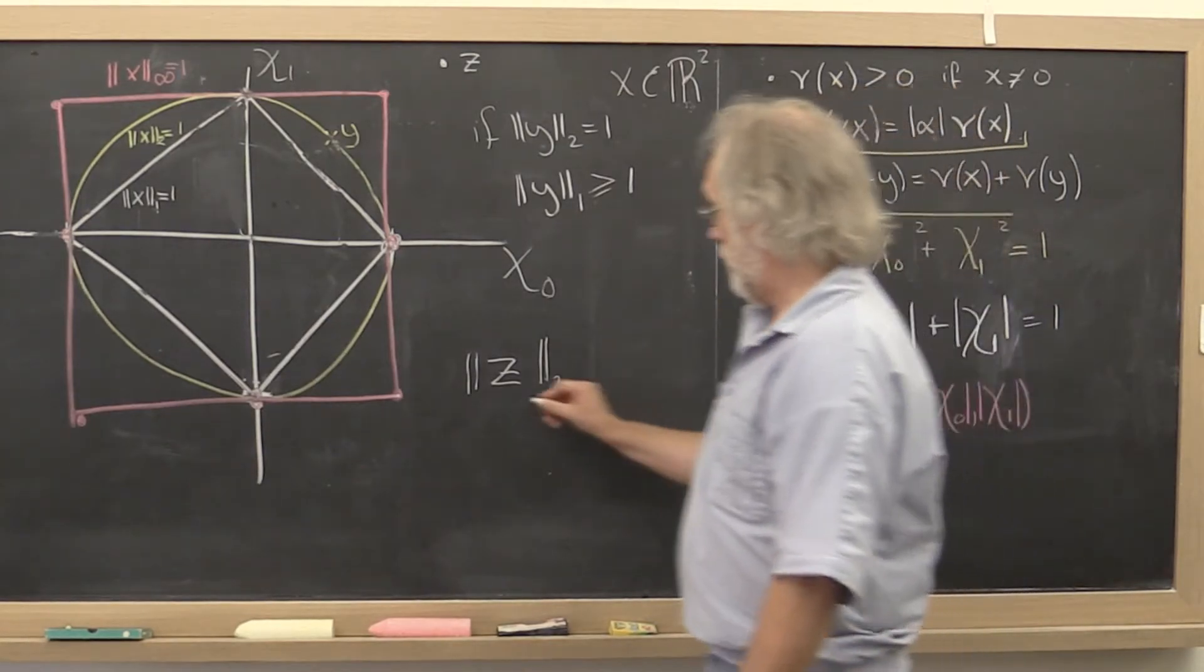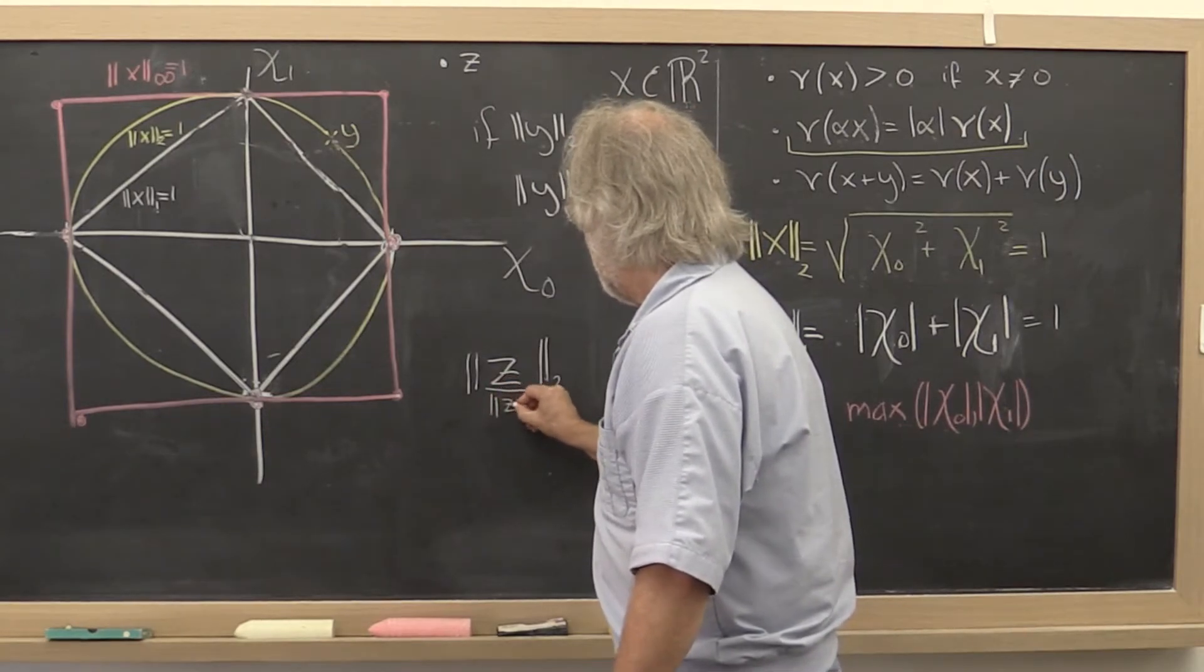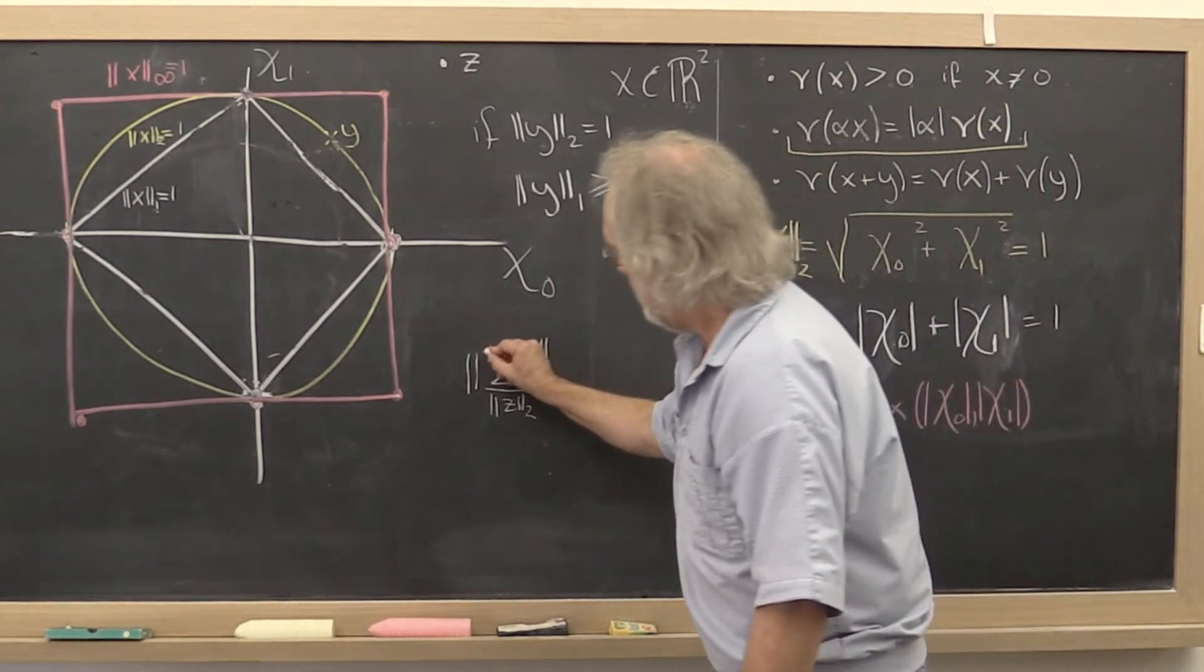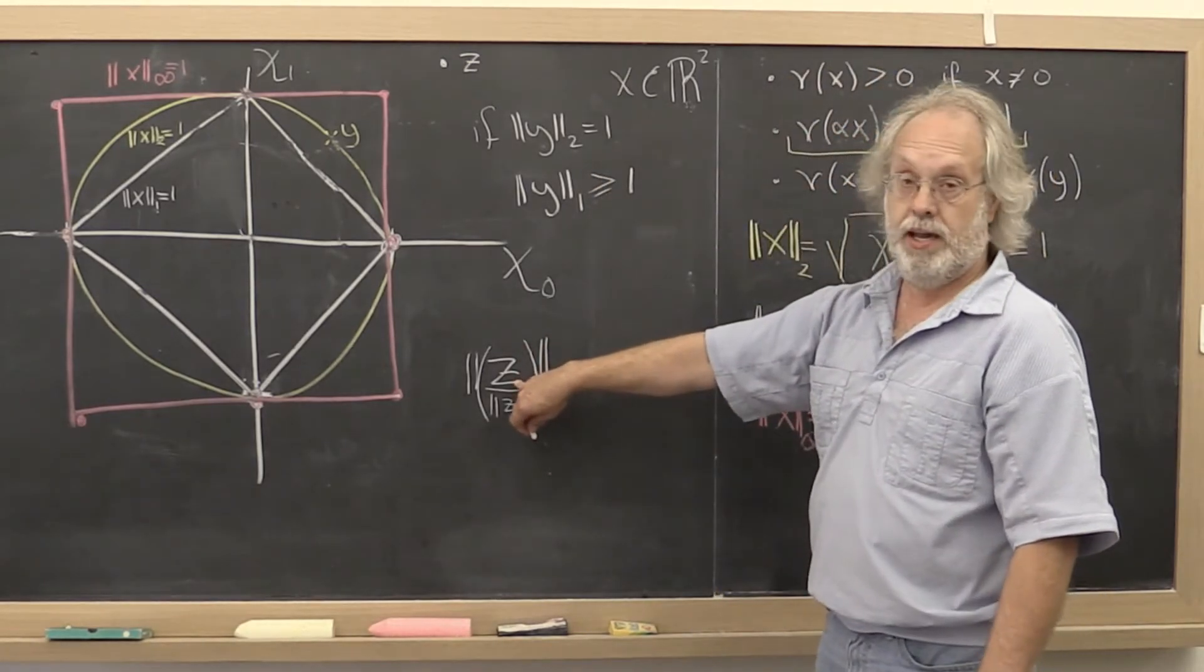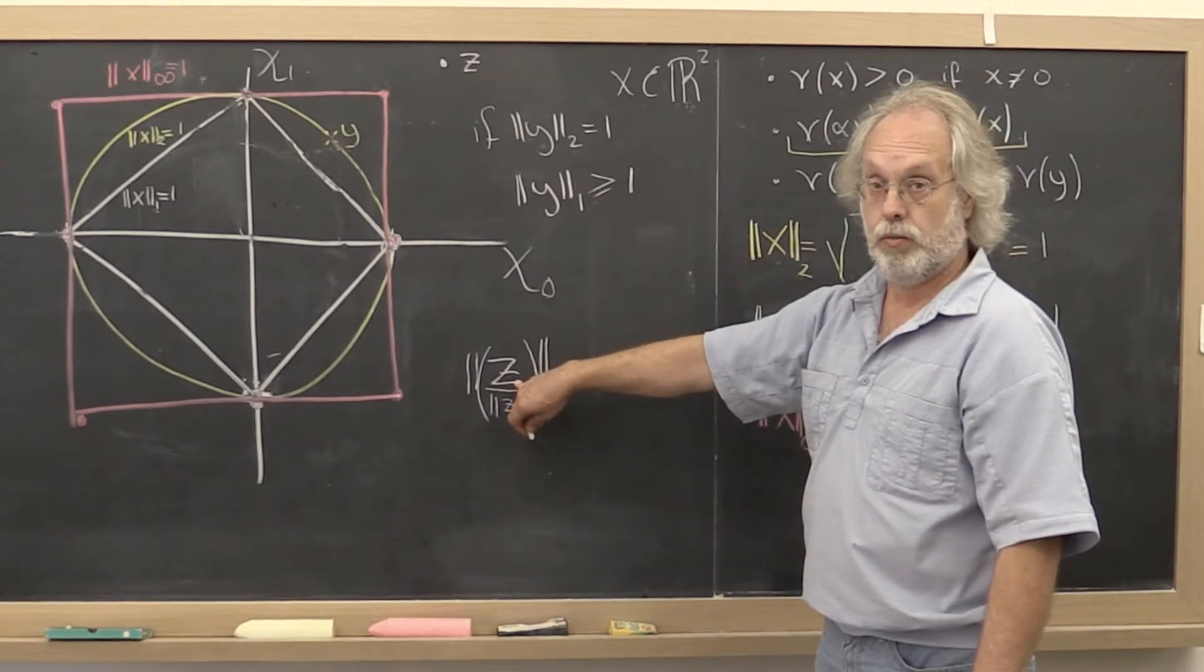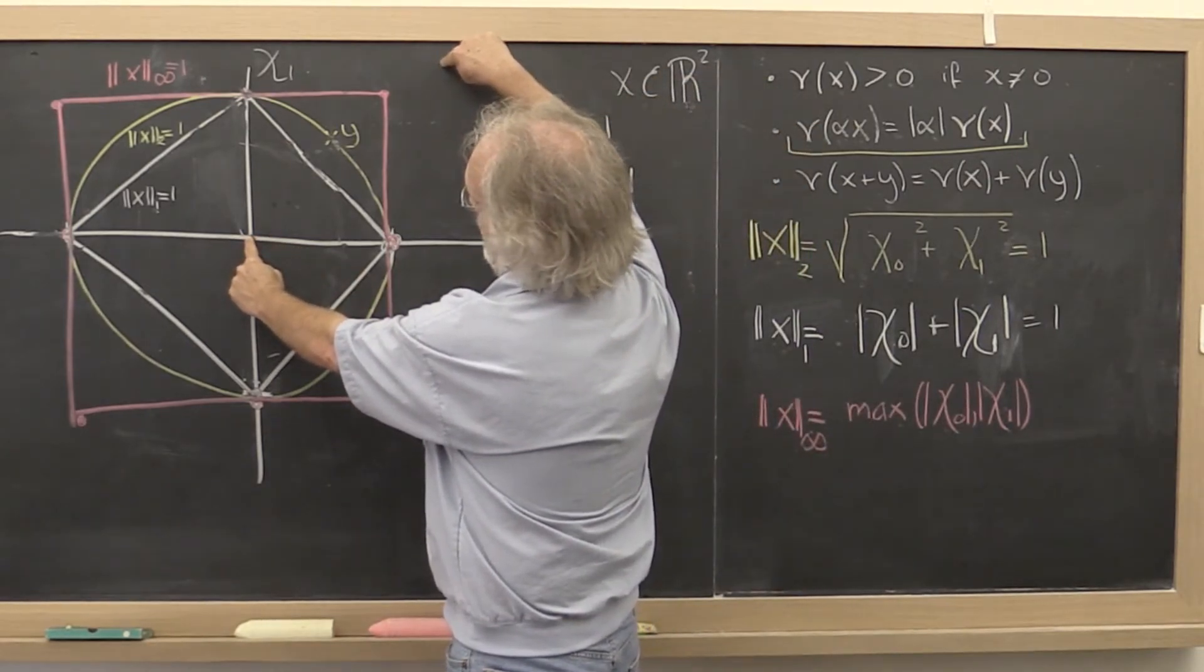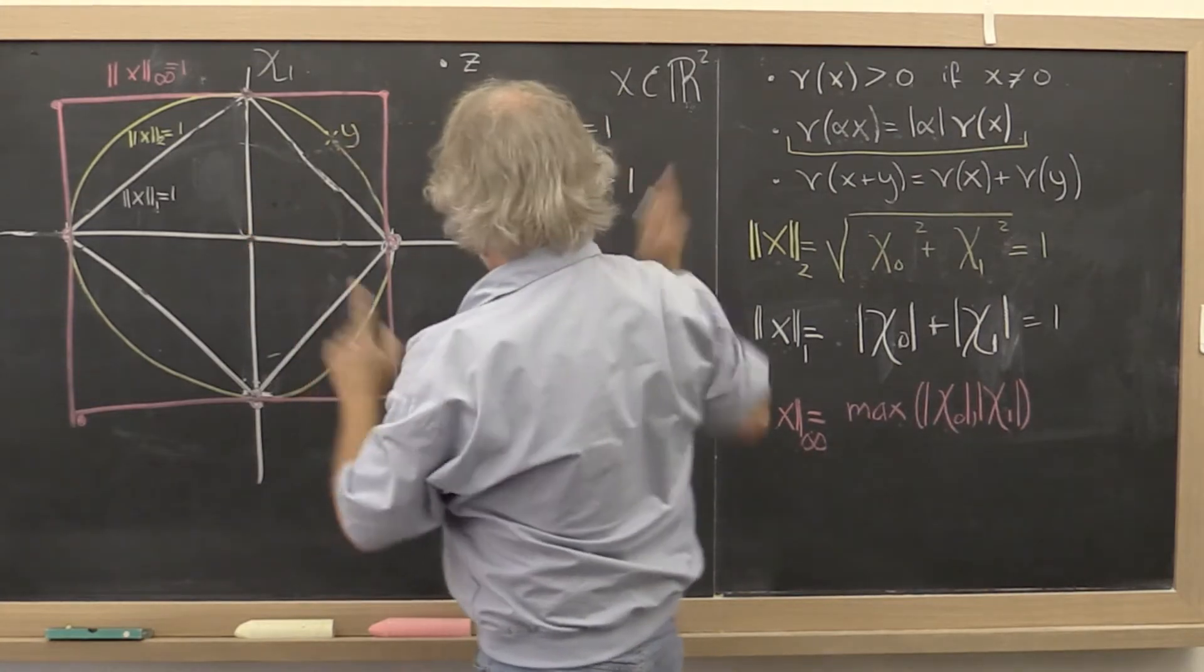But what we do know is that we can scale that vector by its length and using this bring that inside. And what we have just created is a vector of length 1. What does that really mean? It means that we took this vector z and we scaled it down to place it on the unit ball.